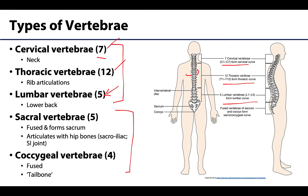Five sacral vertebrae fuse to form the sacrum, and there is no movement between these vertebrae. The sacrum does articulate with the hip or coxal bones on either side, forming the sacroiliac, or SI, joints. These SI joints are capable of some movement.